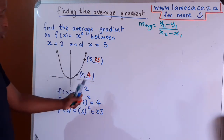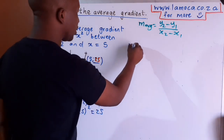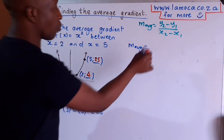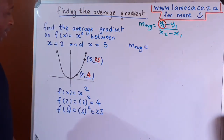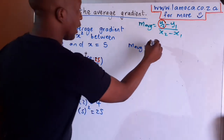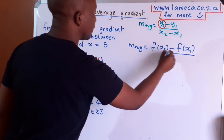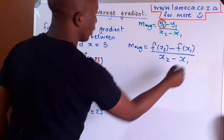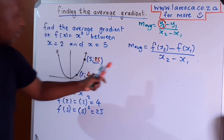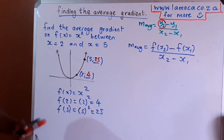Now that I've got both points complete, I can work out the average gradient between those two x values. The average gradient is y2 minus y1 over x2 minus x1. Since the way I found y2 was by substituting an x value into the equation, I'm going to write this as f of x2 minus f of x1, divided by x2 minus x1. To get y2 you substitute x2 into the equation, and to get y1 you substitute that x value into the equation.